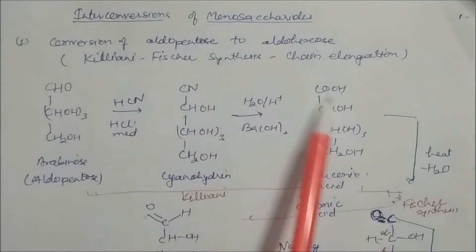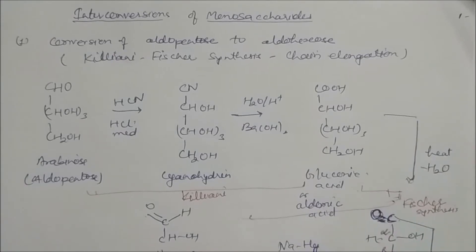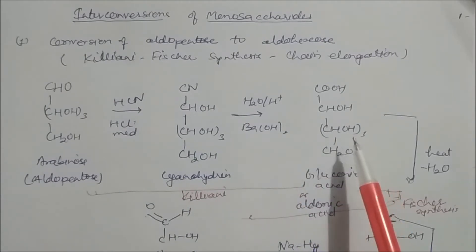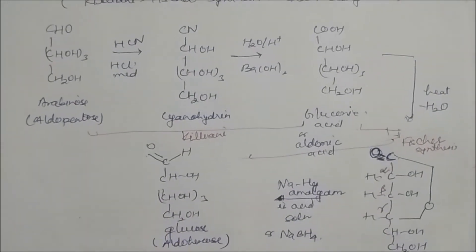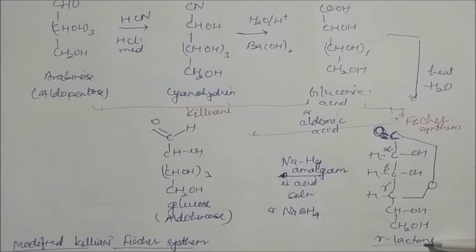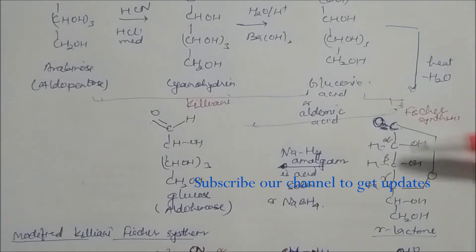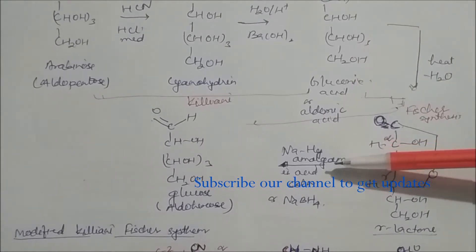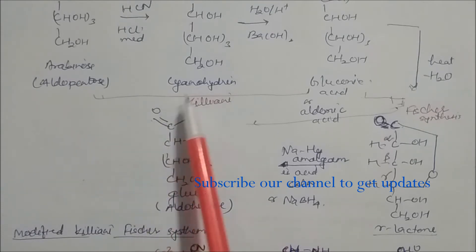Up to glucaric acid formation is the Kiliani part of the synthesis. The next steps belong to the Fischer synthesis — that is why it is called Kiliani-Fischer synthesis. After the glucaric acid is formed, heating produces a gamma-lactone, where the gamma carbon oxygen attacks the carboxyl carbon to form a five-membered ring. The gamma-lactone is then reduced using sodium amalgam in acetic medium or sodium borohydride to give glucose.